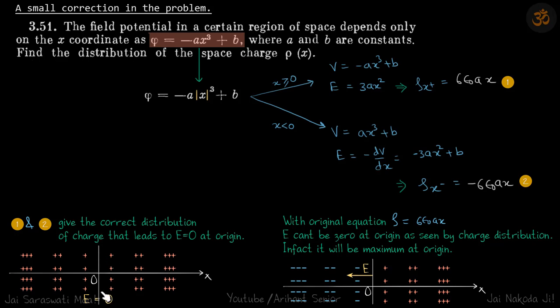So with the original equation ρ = 6ε₀ax, E cannot be zero at origin as seen by the charge distribution. In fact, it will be maximum at origin in magnitude.